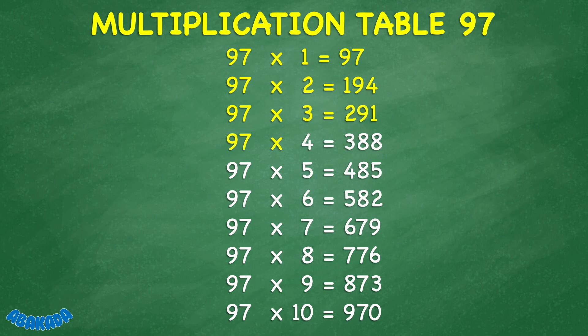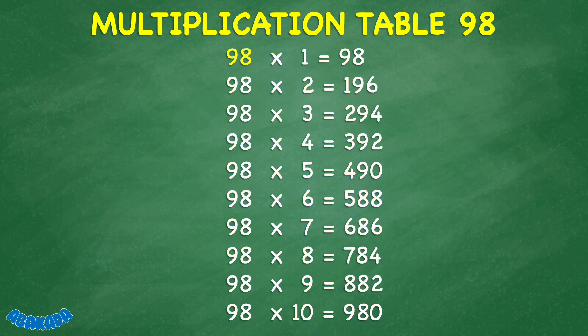97 times 4 equals 388. 97 times 5 equals 485. 97 times 6 equals 582. 97 times 7 equals 679. 97 times 8 equals 776. 97 times 9 equals 873. 97 times 10 equals 970. 98 times 1 equals 98.